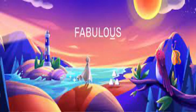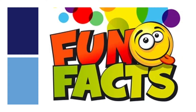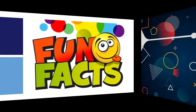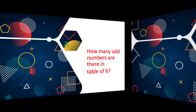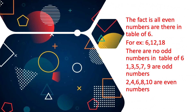Fabulous! This is a fun fact — something interesting about the table of 6. How many odd numbers are there in the table of 6? Pause the video and think. The fact is: all numbers in the table of 6 are even. For example: 6, 12, 18 and so on. There are no odd numbers in the table of 6. Odd numbers are 1, 3, 5, 7, 9. Even numbers are 2, 4, 6, 8, 10.